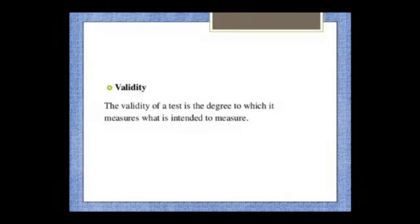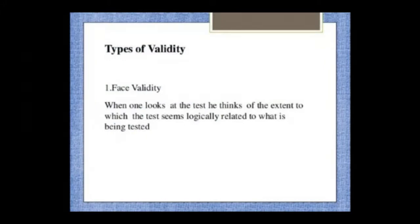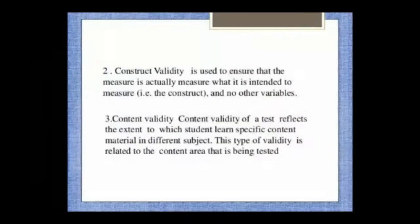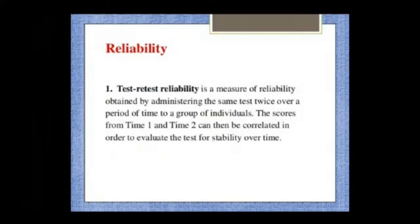What is validity? The validity of a test is the degree to which it measures what it is intended to measure. Types of validity: 1. Face validity, 2. Construct validity, 3. Content validity, 4. Performance validity, 5. Concurrent validity.